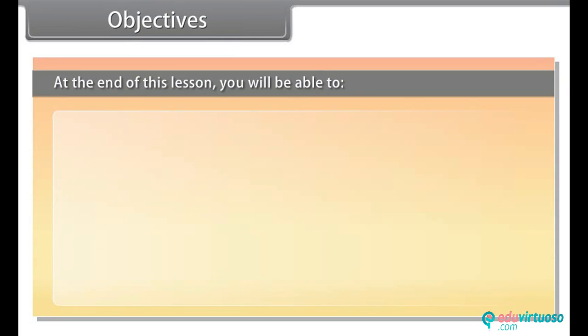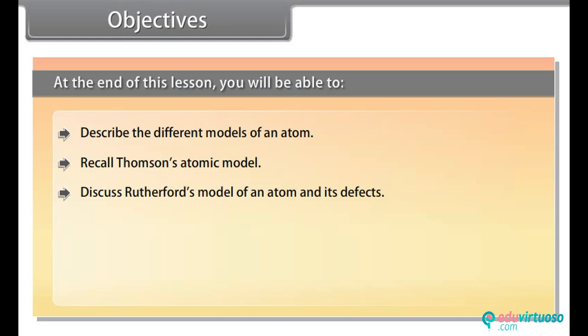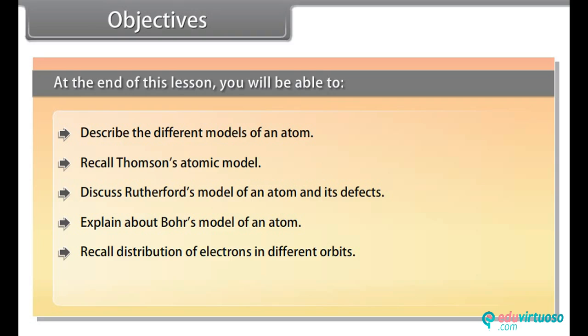Objectives. At the end of this lesson, you will be able to describe the different models of an atom, recall Thomson's atomic model, discuss Rutherford's model of an atom and its defects, explain about Bohr's model of an atom, recall distribution of electrons in different orbits, and distinguish between atomic number, mass number, isotopes and isobars.